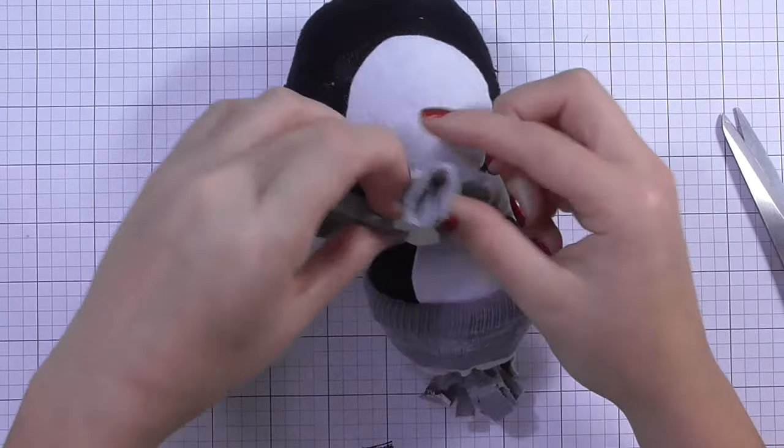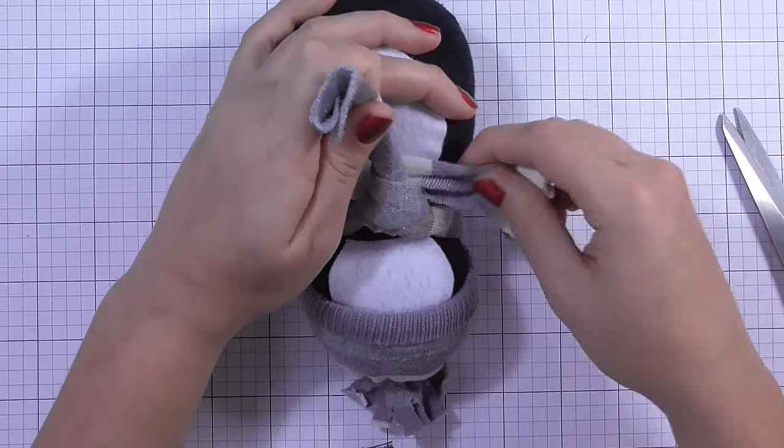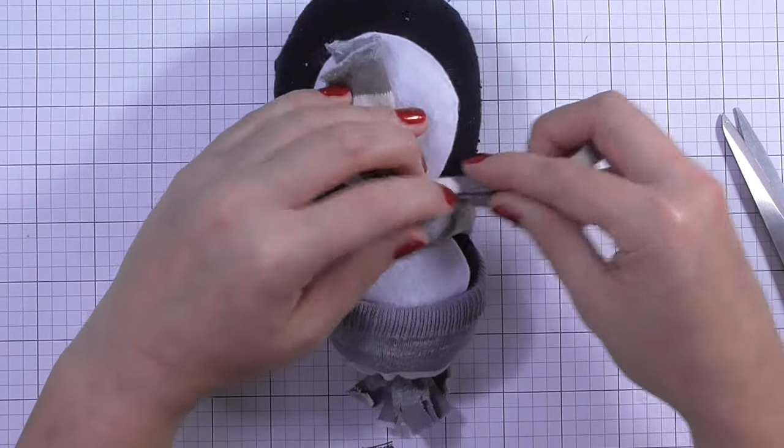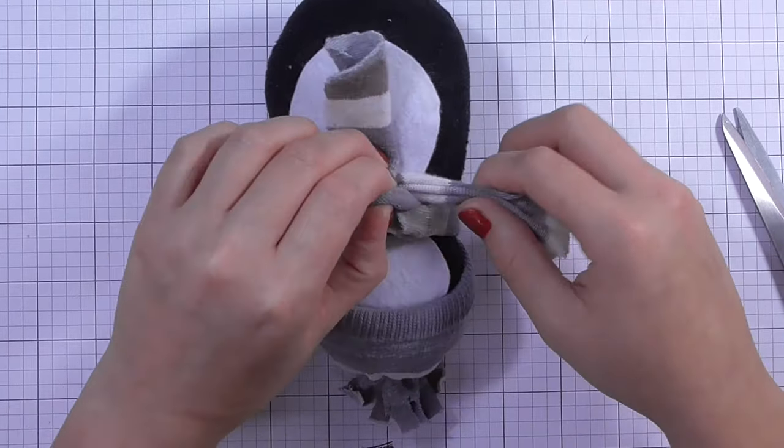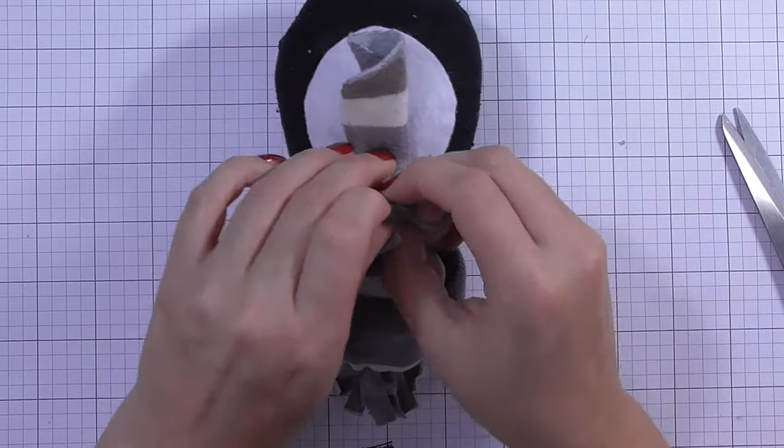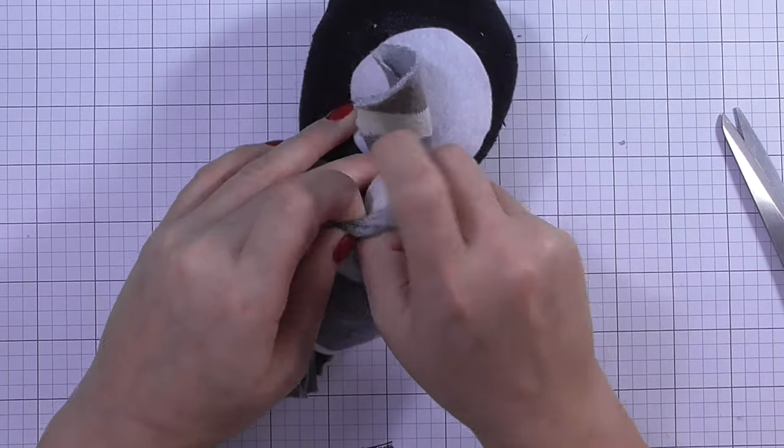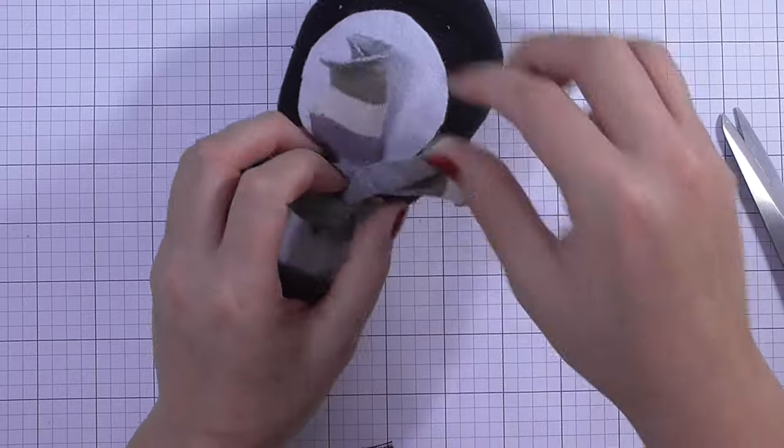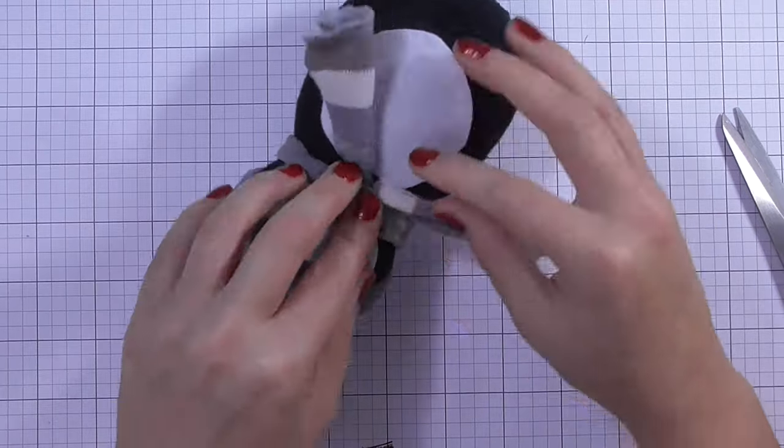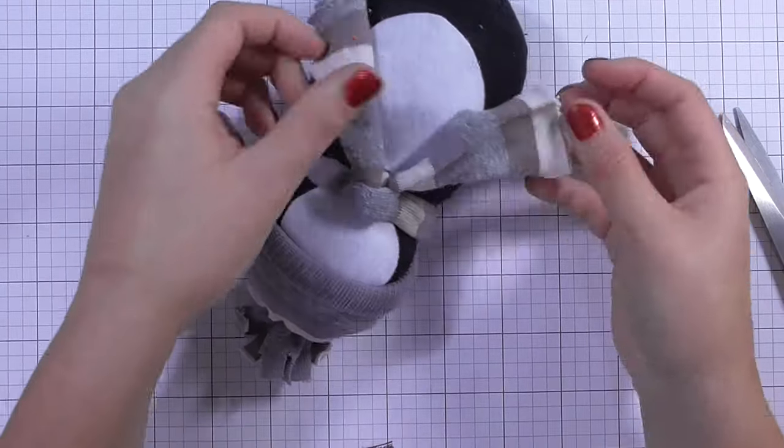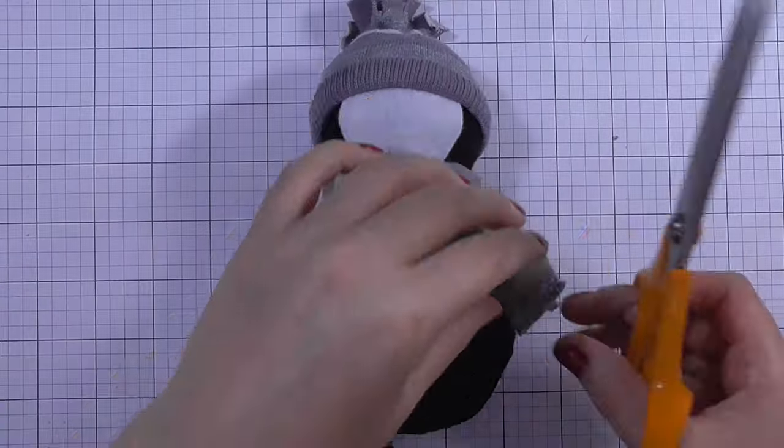I decided to tie almost like a tie knot by wrapping that around and then pulling it back through and then just straightening that out. I think that gives the most realistic sort of scarf shape or scarf knot, and I was pleased with how that turned out.